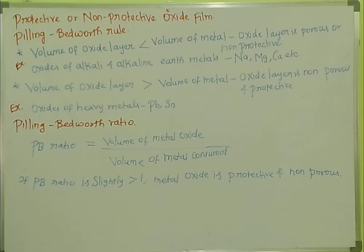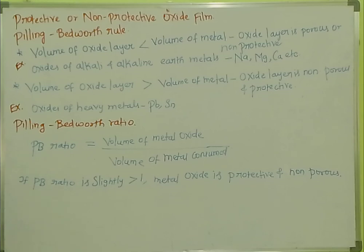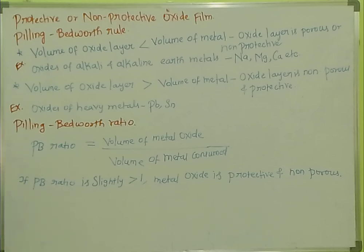So this is the Pilling-Bedworth rule — an important topic in dry corrosion. Students, please watch the full playlist for engineering chemistry and all related topics. Now for dry corrosion, we will talk about oxidation corrosion. There are 3 types of oxidation corrosion, which we will finish in this video.